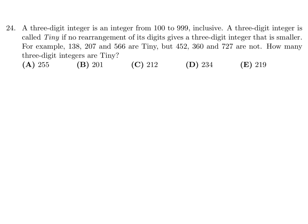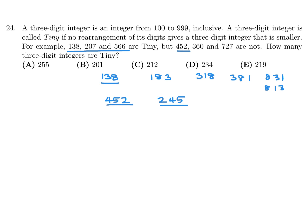Before rushing into the question, let's discuss what they're talking about. Why is 138 tiny? Its rearrangements are 183, 318, 381, 831, and 813. Of these rearrangements, the smallest one is 138 itself — so therefore it's tiny. Now why is 452 not tiny? Because I can make a rearrangement 245 that is smaller. And since that's smaller, this number is not tiny. So of all the numbers from 100 to 999, how many of them are tiny?